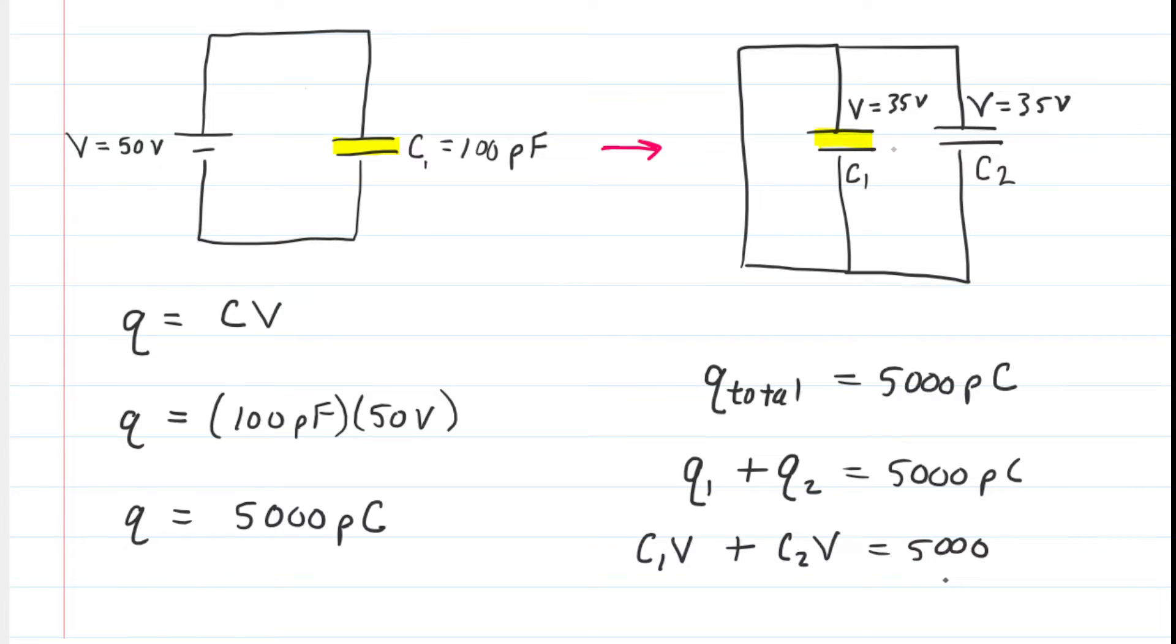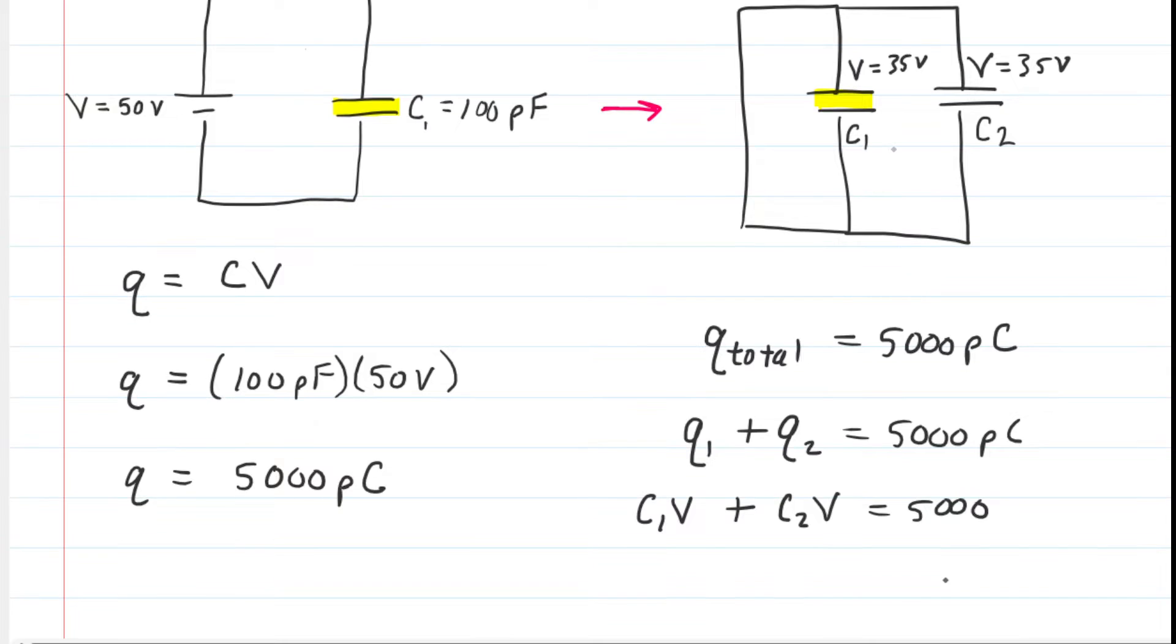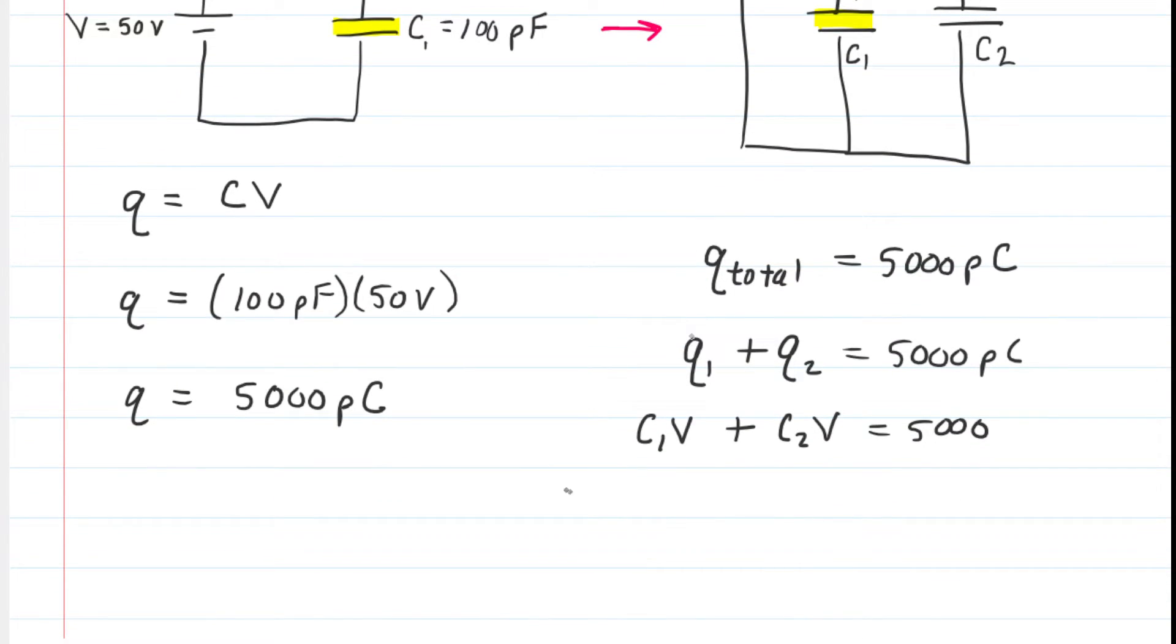We can begin to plug in some known values. We know that C1 is the 100 picofarads. That is an inherent property of C1. It's not going to change even though we've switched it into a new circuit. So C1 remains 100 picofarads. The potential difference across those plates is 35.